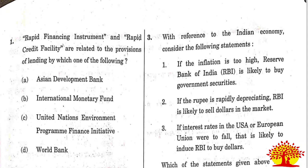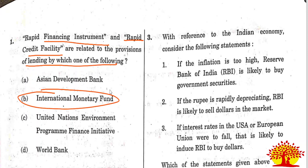Questions 1 to 10 are related to economy. First question: Rapid Financing Instrument (RFI) and Rapid Credit Facility are related to the provision of lending by which one of the following? The correct answer is International Monetary Fund (IMF). The Rapid Financing Instrument is a lending facility of IMF that provides emergency assistance to its member countries.